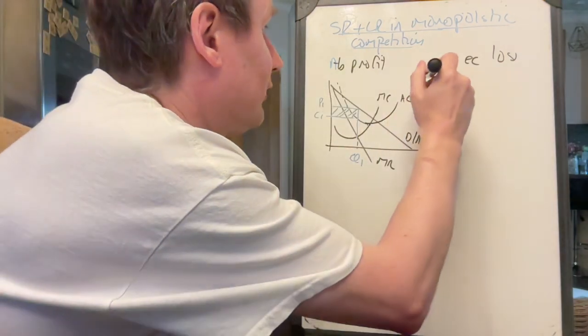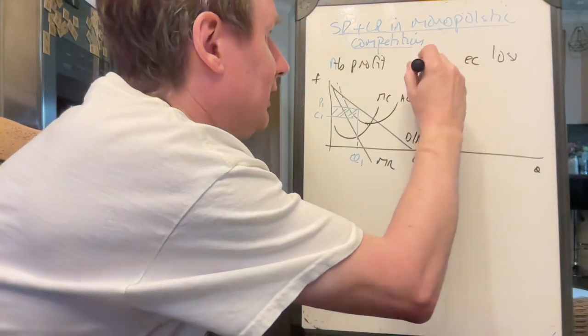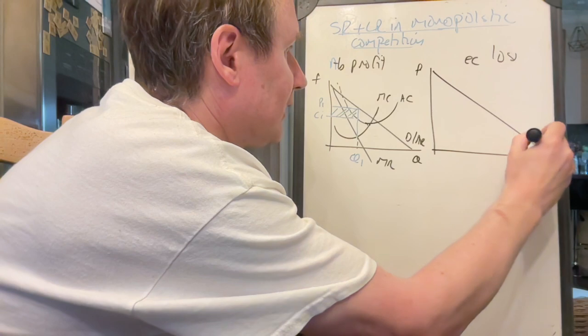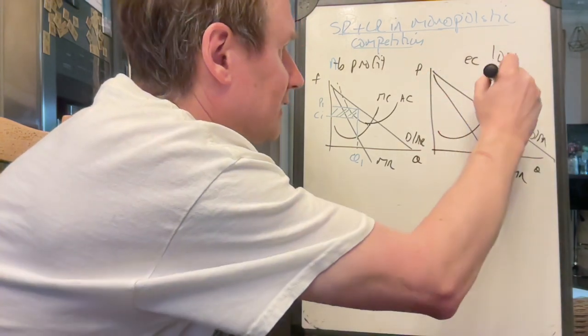If we do the same for a firm over here, and again, we'll give it, there's demand, average revenue, there's MR, there's MC.